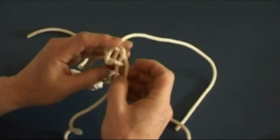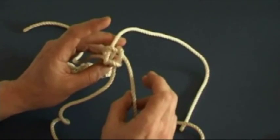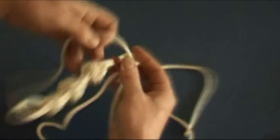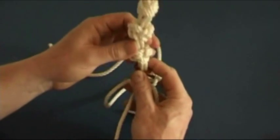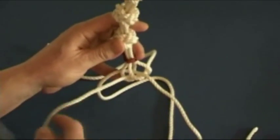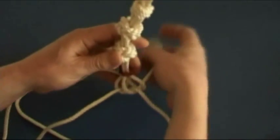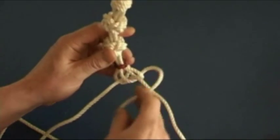I am going to turn the whole thing over and tie another crown knot. And again I am going to tie this in a clockwise direction. Spread the leads out so that we can see what we are doing. Another crown knot clockwise direction.